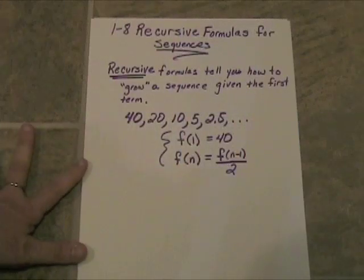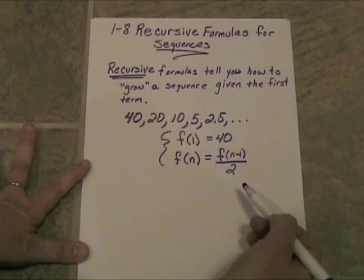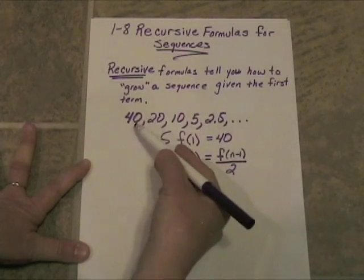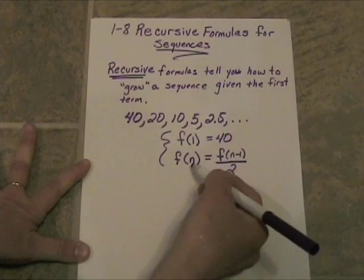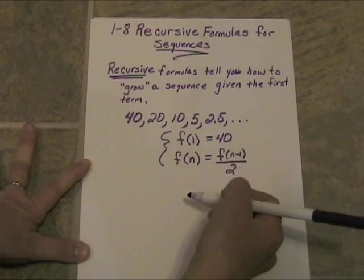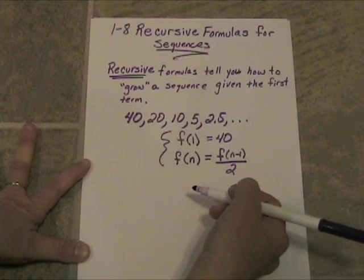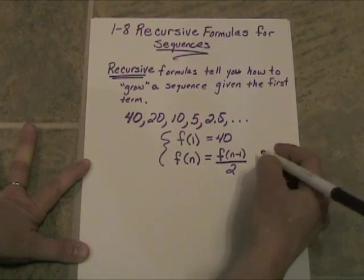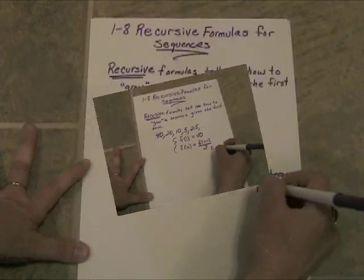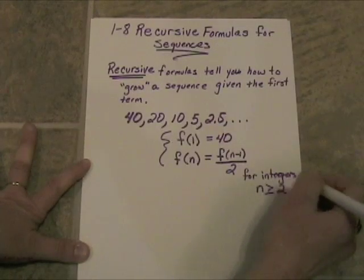We want to put a small condition on the n as well here. We know what the first term is. It's 40 and that's listed right here. So this is going to be for all remaining terms where n are integers greater than or equal to 2. So we are going to write for integers greater than or equal to 2.